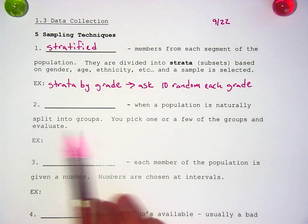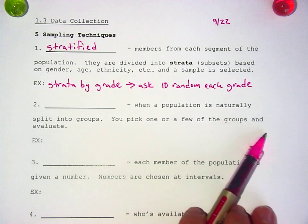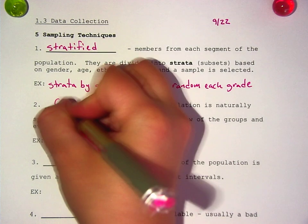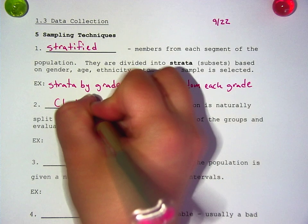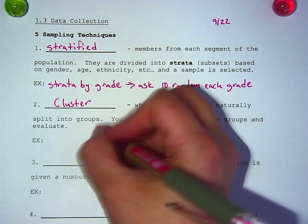Next one. When a population is naturally split into groups, and then you pick one or a few of the groups to evaluate, this is called a cluster sampling. This is usually by location.